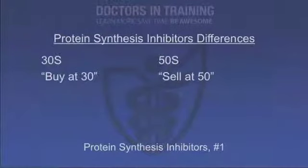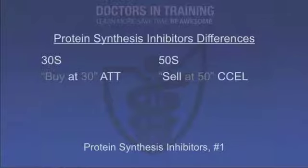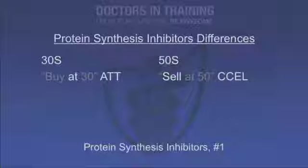There's a mnemonic to help remember which drugs bind to the 30S and which bind to the 50S subunit: 'buy at 30, sell at 50.' The mnemonics are ATT for the 30S and CCEL for the 50S. There is some possibility for toxicity to host cells because of similarities between the bacterial ribosome and mitochondrial ribosomes in humans.